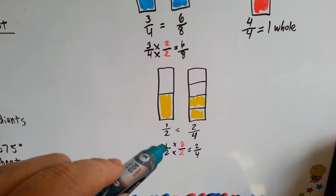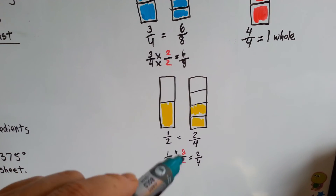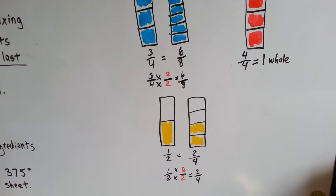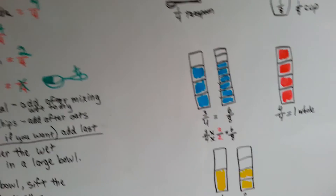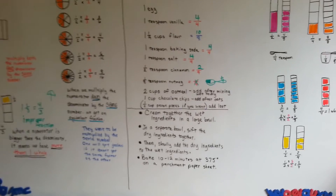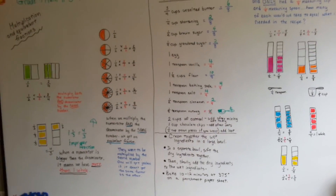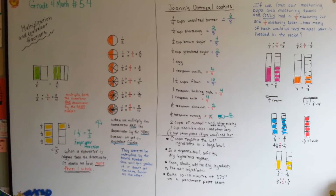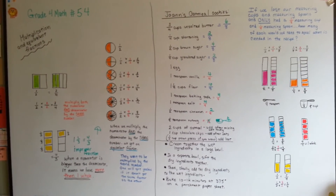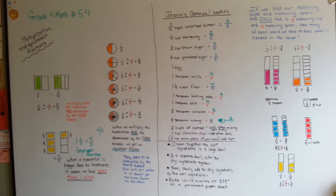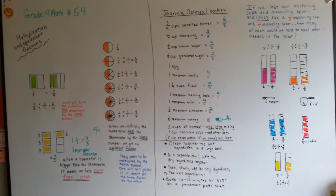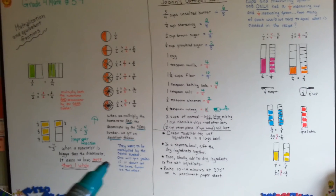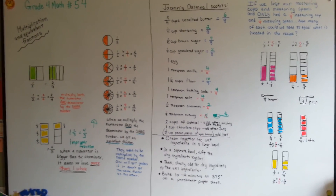And one-half equals two-fourths because we multiplied the numerator and denominator by two: one times two is two, two times two is four. So remember, you have to multiply the numerator and denominator by the exact same number. You can't multiply the numerator by two and the denominator by three — that won't work. Always make sure, when trying to make equivalent fractions, that you multiply by the exact same number for both the numerator and the denominator.